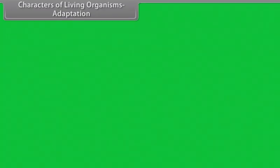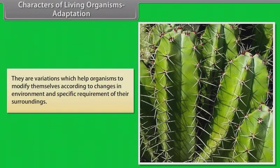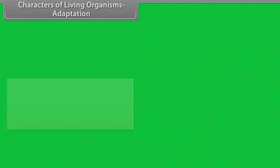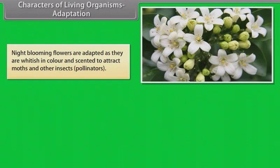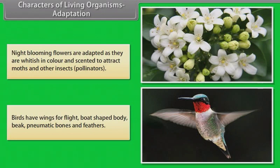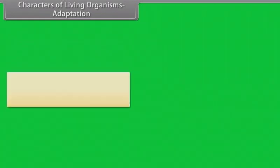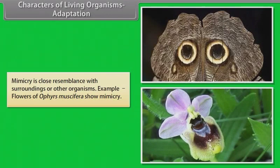They are variations which help organisms to modify themselves according to changes in environment and specific requirement of their surroundings. Example: Snow leopards have stocky bodies, thick fur and small round ears which help to minimize the heat loss. While leaves of cactus are reduced to thorns so that surface area of transpiration is reduced. Night blooming flowers are adapted as they are whitish in color and scented to attract moths and other insects, pollinators. Birds have wings for flight, boat-shaped body, beak, pneumatic bones and feathers. Mimicry is close resemblance with surroundings or other organisms. Example: Flowers of Ophyrus musifera show mimicry.